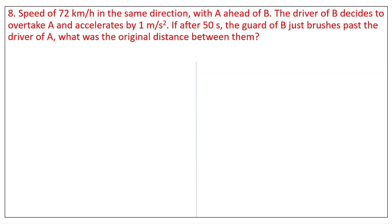Question 8. Two trains are speeding in the same direction with a speed of 72 km/h, with train A ahead of train B. The driver of B decides to overtake A and accelerates by 1 m/s². If after 50 seconds the guard of B just brushes past the driver of A, what was the original distance between them?